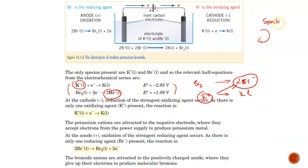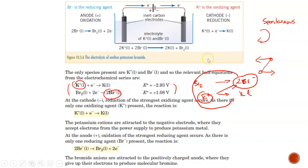Looking at the reverse reaction, Br⁻ is oxidized — the bottom reaction goes forward for the electrolysis. Potassium is reduced to potassium metal at the cathode (negative electrode), with K⁺ as the oxidizing agent. Br⁻ is the reducing agent and is oxidized to Br₂ liquid — bromine is a brown liquid which we would visually see produced at the anode. That's it for this electrolysis video; there will be more practice questions and I'll see you then.